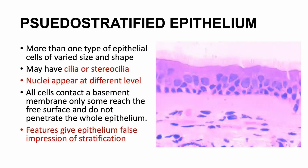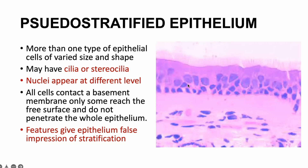Pseudostratified epithelium has cells of varying size, and can have cilia or stereocilia on the apical surface. It's pseudostratified because the nuclei appear at different levels — it's actually one layer, but because the nuclei are arranged differently, it looks like multiple layers. So you would see it and think it's stratified, but it's not. It literally has just one cell layer arranged this way — that's why we call it pseudo. All cells contact a basement membrane, but only some reach the free surface.